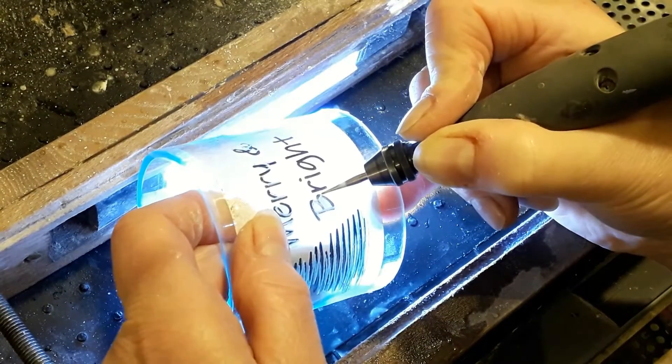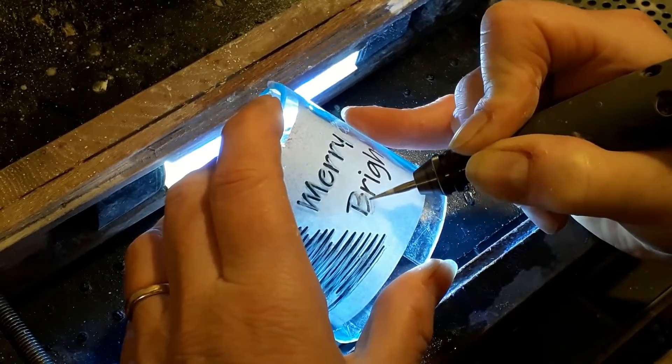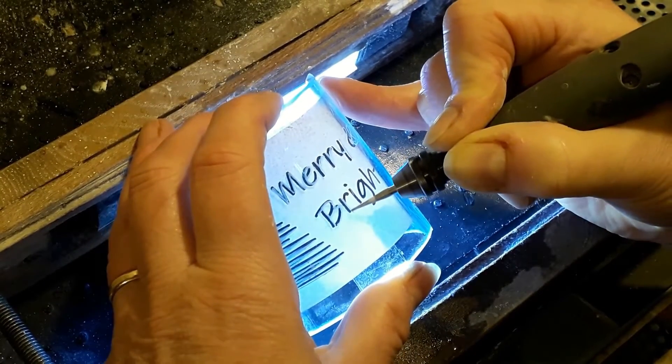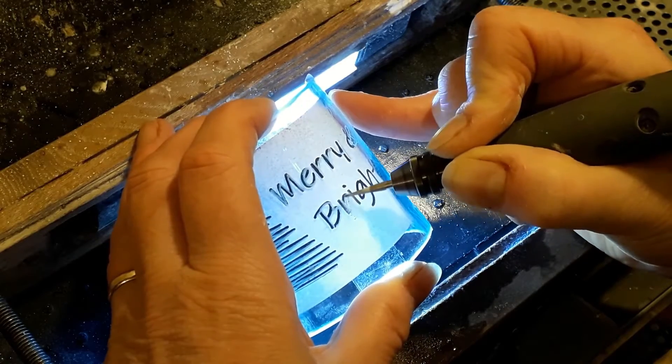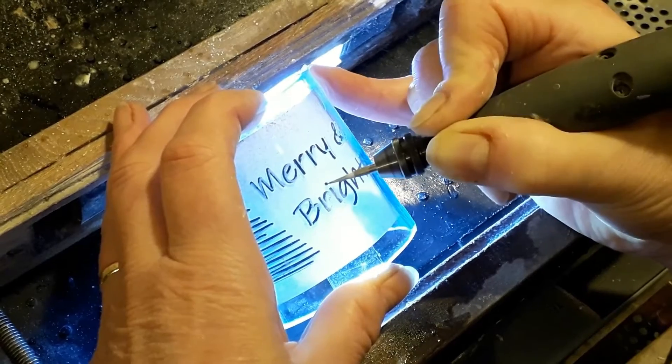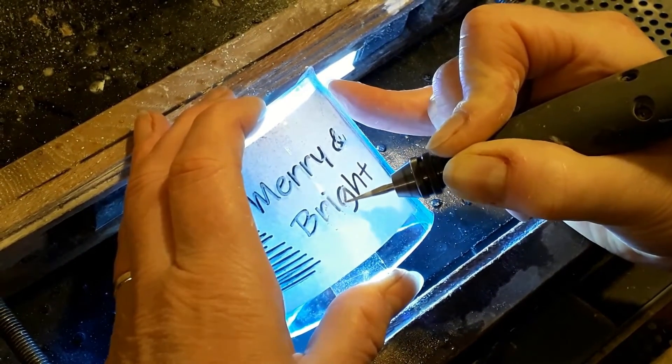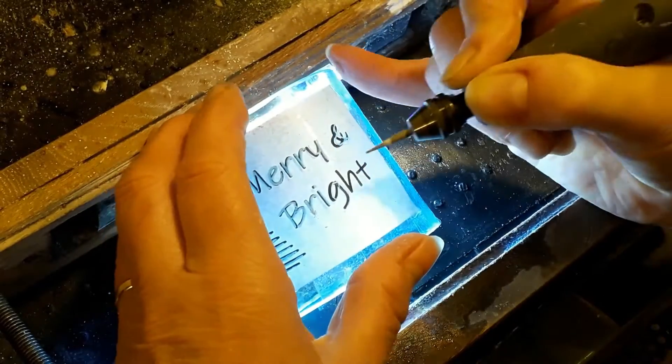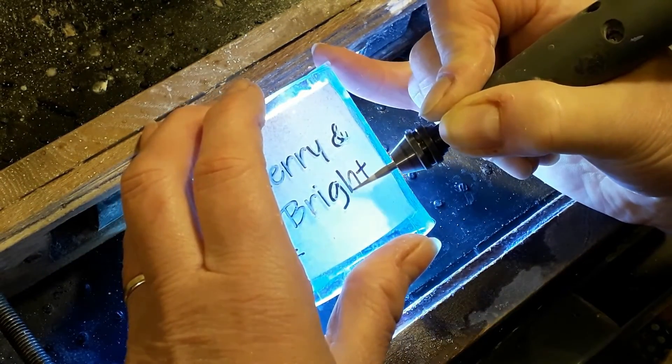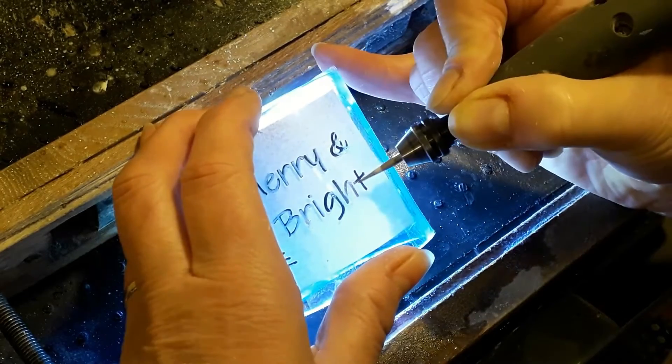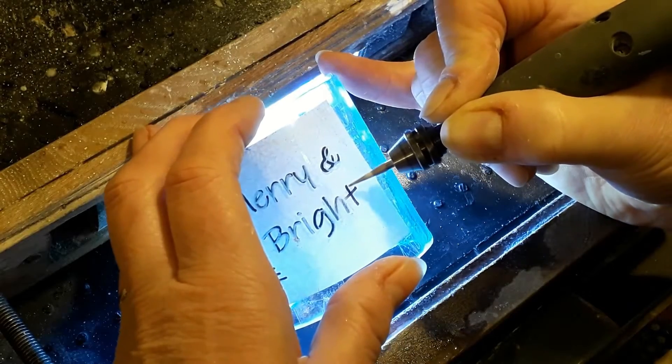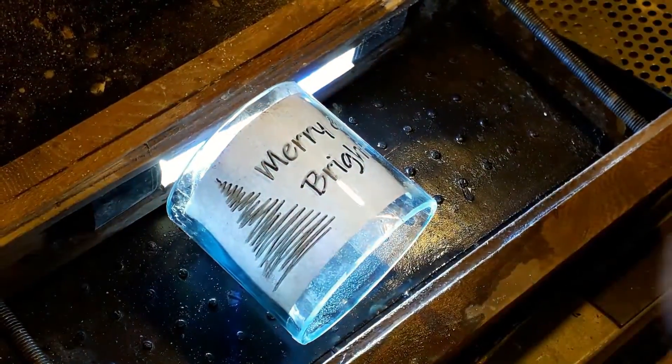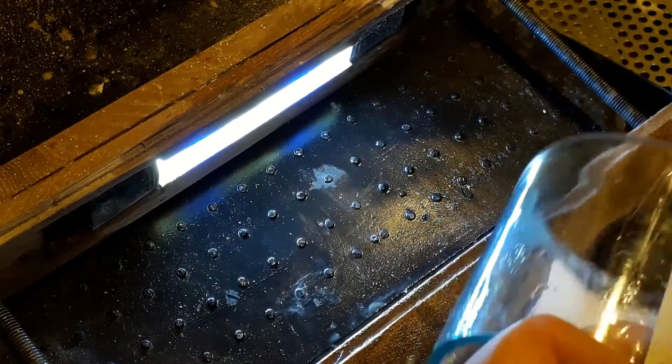I know there are people out there who can do beautiful calligraphy on glass, lovely sweeping flowing letters. I am not one of them. I have to be careful, carefully following the template on the glass, going fairly slowly and then going back over it again to try to get a reasonable quality of text. With that last letter done, I can remove the template and then start the next stage of the engraving.